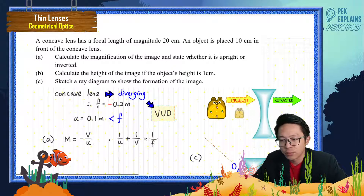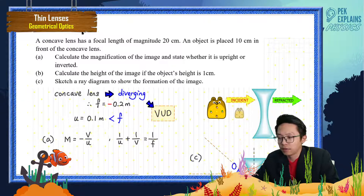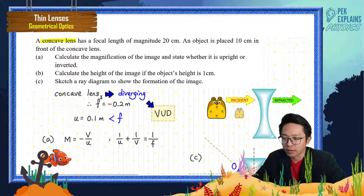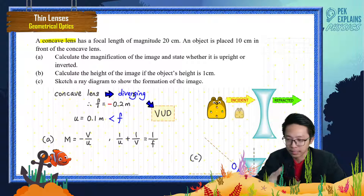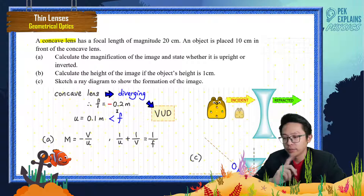First of all, this problem uses a concave lens. What is a concave lens? A concave lens is the thin one — it is a diverging lens. It will diverge light, it won't focus light. So because it is a diverging lens, the focal length must be negative.